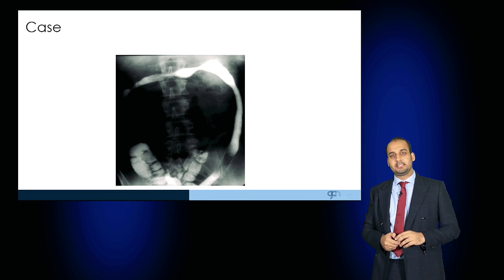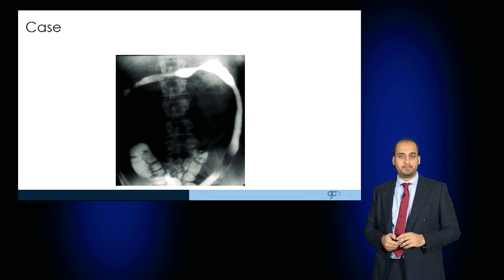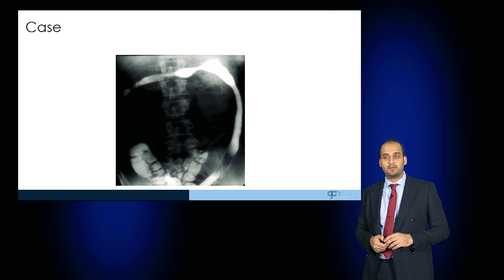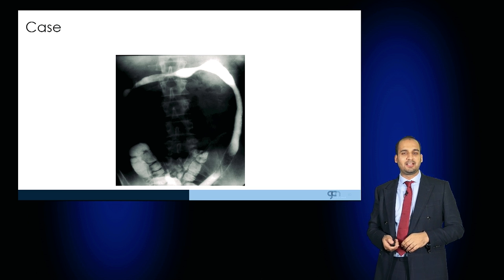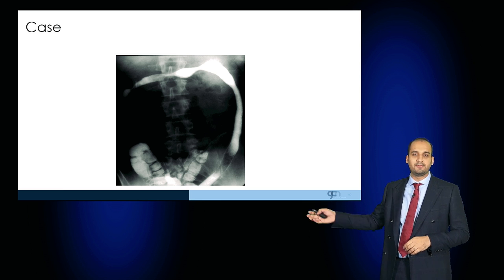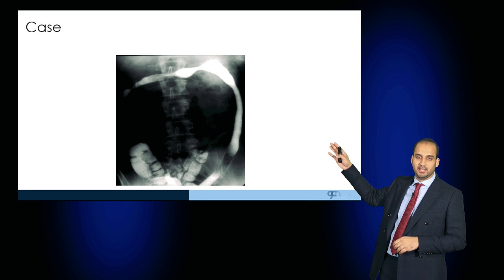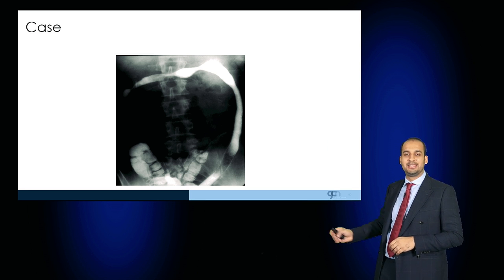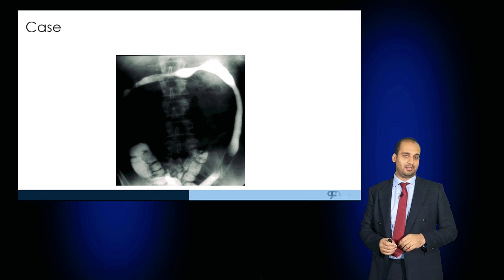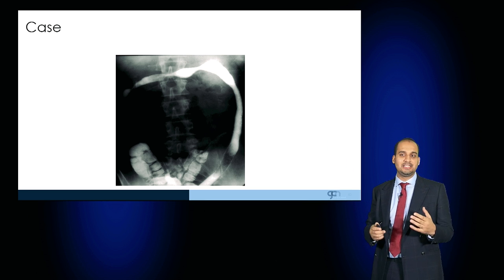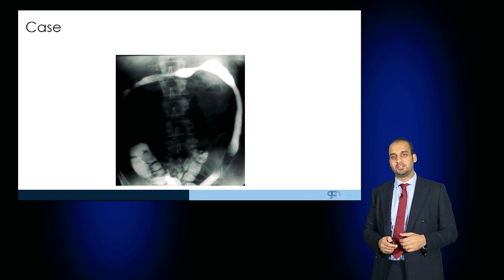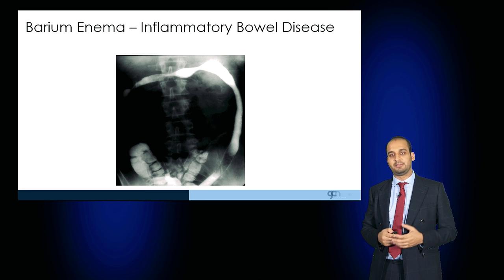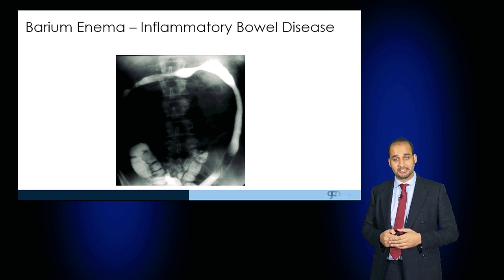Have a look at this — this is a barium enema given to a patient. What you can see is a complete loss of architecture along the transverse colon and the descending colon. And this is seen in conditions such as inflammatory bowel disease.